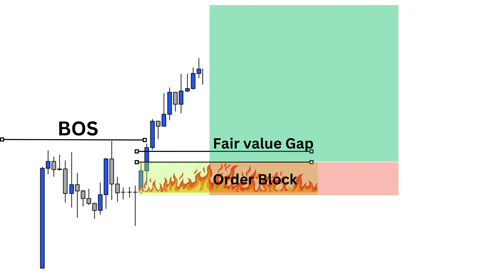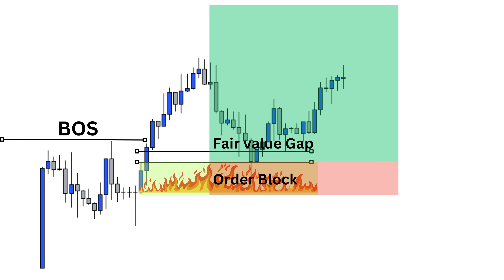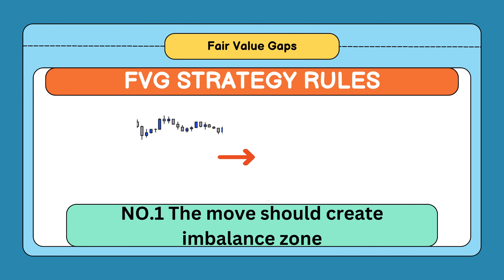Now we are going to learn how we can take trades using fair value gaps. Markets always come back to fulfill these imbalanced zones, but we can't trade this zone blindly — we need a set of proven rules. Rule number one is the move should create an imbalanced zone. Imbalance occurs when we have drastic moves that create gaps between shadows.